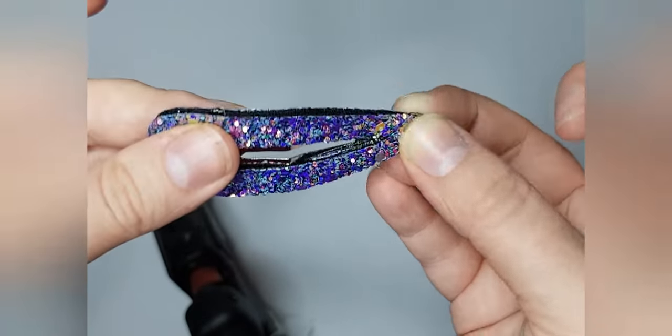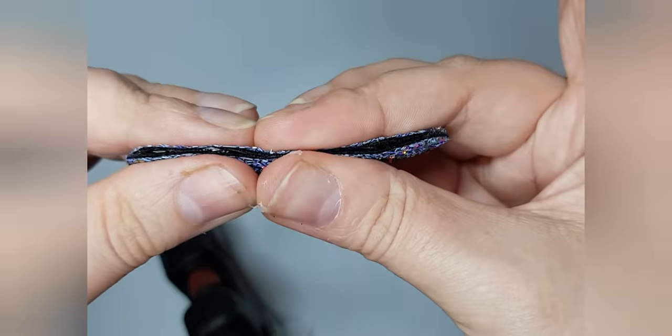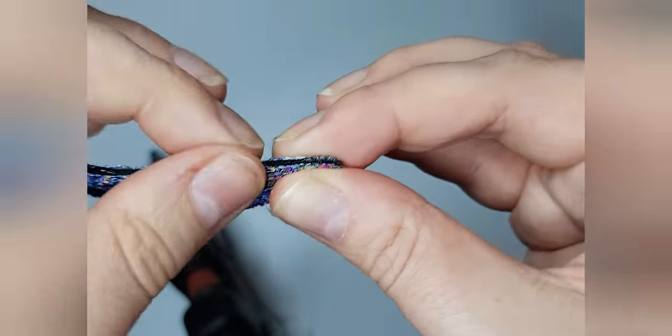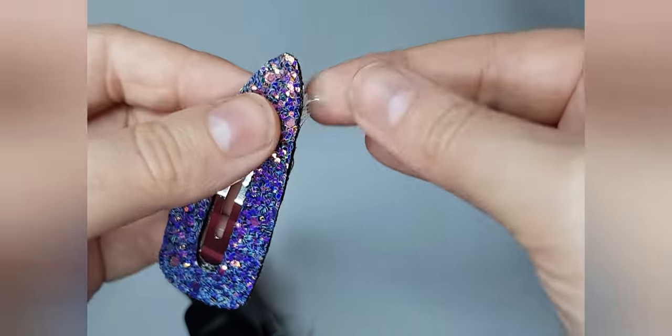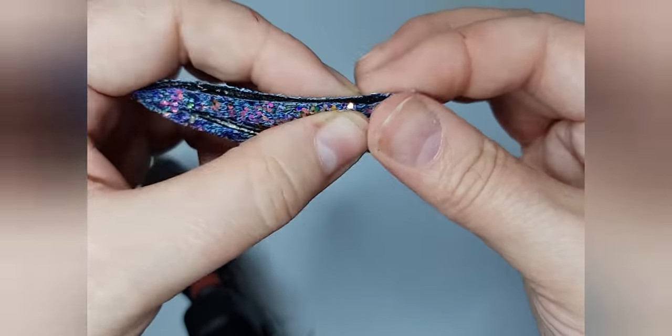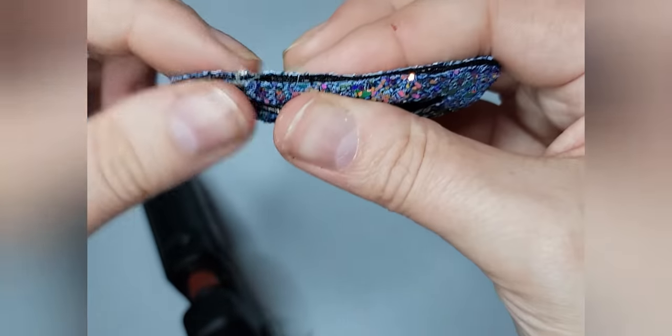And then line it all up, make sure it's all nice and even. And then I just take my fingers. If there's any glue, I'll show you how to clean it up in a minute because you will get a little bit. But just press them together so you've got nicely sealed edges.